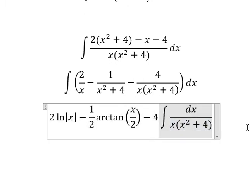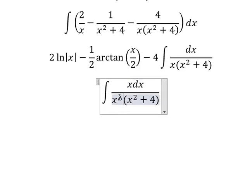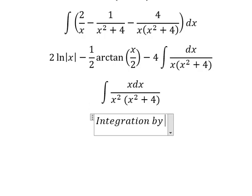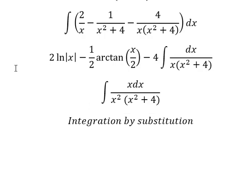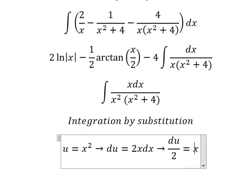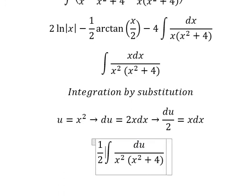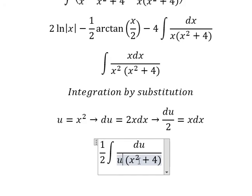Now I will concentrate on this remaining term. We multiply x on the numerator and denominator so we can use integration by substitution. I will put u equals x squared, where du equals 2x dx, because the first derivative of x squared is 2x. Then we divide both sides by 2, so dx equals du over 2. This gives us u in the numerator and u in the denominator.